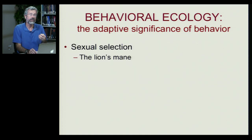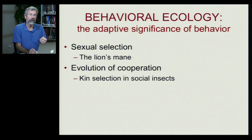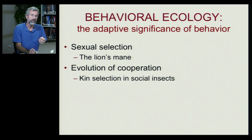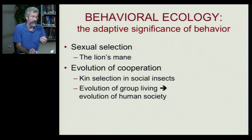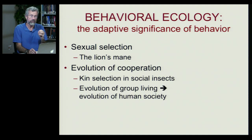We've already seen examples of this with sexual selection, where female lions preferred males with dark manes and therefore had more surviving offspring. We also saw it when we looked at the evolution of cooperation — we saw helpers at the nest, and we also saw how social insects work to assist the queen. We want to look now at another trait that's very common in nature: group living.